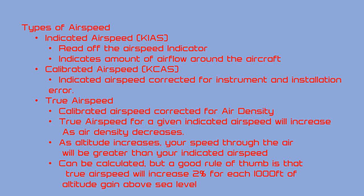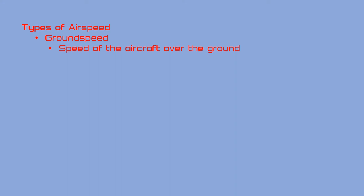In other words, if you're doing 100 knots of indicated airspeed at 10,000 feet, your true airspeed will be 20% faster, or 120 knots of true airspeed. Finally, ground speed is your speed of the aircraft over the ground — this is true airspeed corrected for headwind or tailwind, and can be read off a GPS or distance measuring equipment (DME).